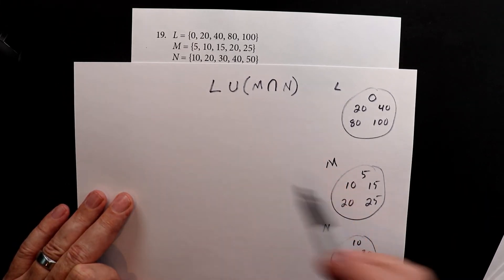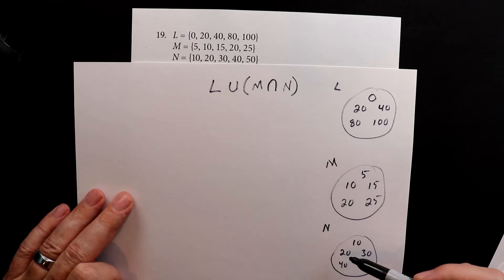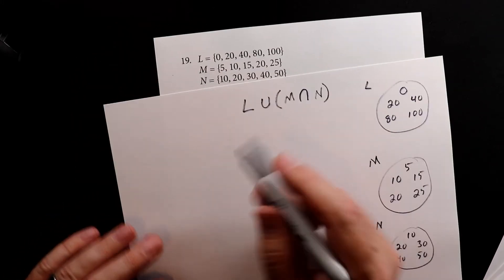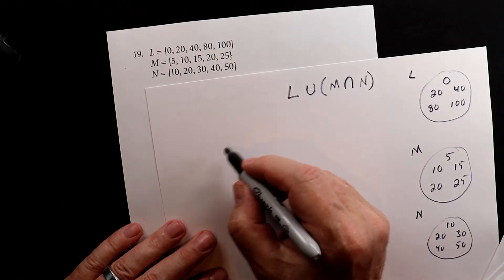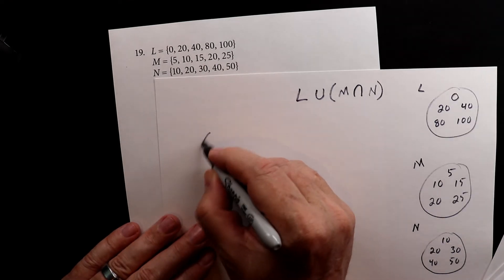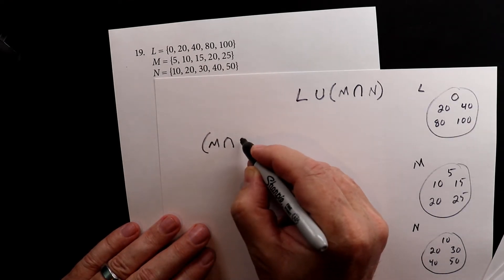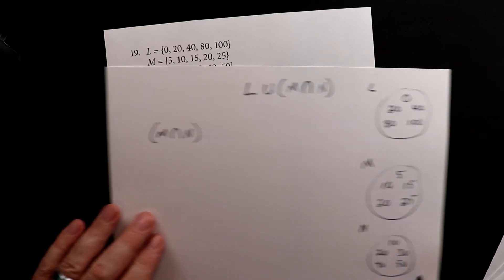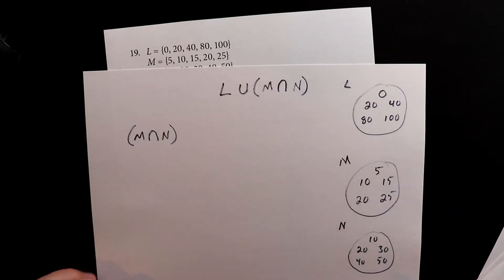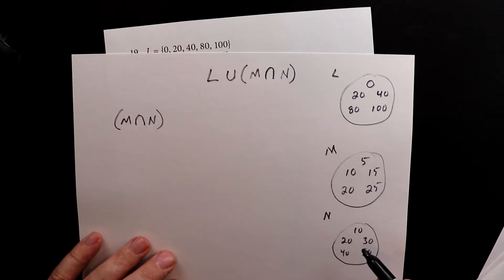Now what we want to do is we want to find where this and this intersect. So we're going to focus on M intersection N. And what that means is we're going to look to see which ones are in common, which ones are in both.